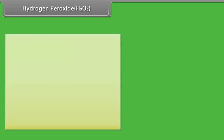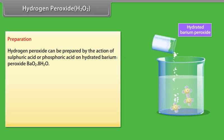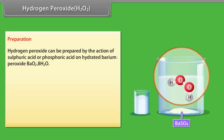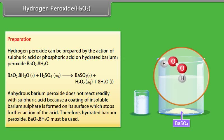Hydrogen peroxide H2O2 preparation: Hydrogen peroxide can be prepared by the action of sulfuric acid or phosphoric acid on hydrated barium peroxide. Anhydrous barium peroxide does not react readily with sulfuric acid because a coating of insoluble barium sulfate is formed on its surface which stops further action of the acid. Therefore, hydrated barium peroxide, BaO2·8H2O, must be used.